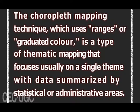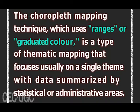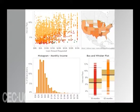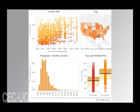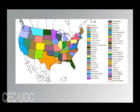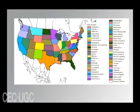Choropleth mapping with exploratory data analysis: the choropleth mapping technique, which uses ranges or graduated color, is a type of thematic mapping that focuses usually on a single theme with data summarized by statistical or administrative areas. The name of this technique is derived from the Greek words 'choros' meaning space and 'plethe' meaning value. Exploratory data analysis (EDA) can help in choosing the most appropriate method for creating choropleth maps, although almost all types of analysis using geographically related data are exploratory. The term exploratory data analysis has a very specific meaning.